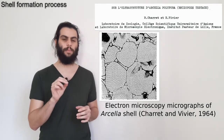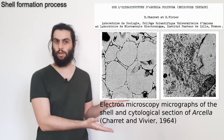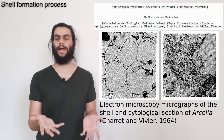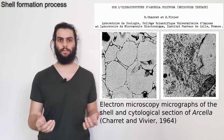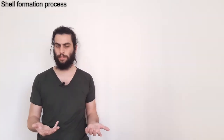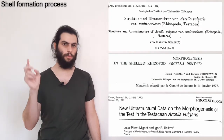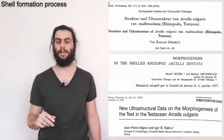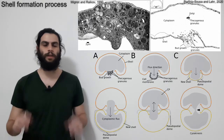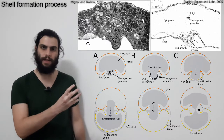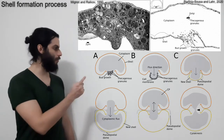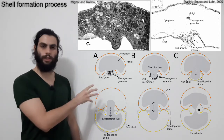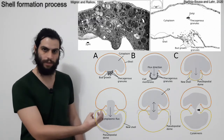Now I'm going to describe the shell formation process based on the studies that appeared in the following years, especially those of Netzel, Grunewald, Minot, and Rykov. These studies were generated in the second period of our timeline and used the electron microscope. The first evidence of shell formation is the growth of the cytoplasm as a bud through the shell aperture. Here, in figure A, we can see this process. We have the shell, inside the shell we have the cytoplasm, and the cytoplasm is growing as a bud through the aperture.